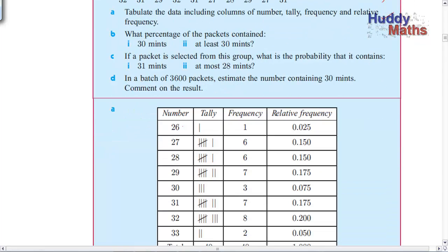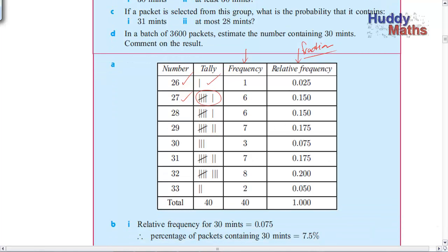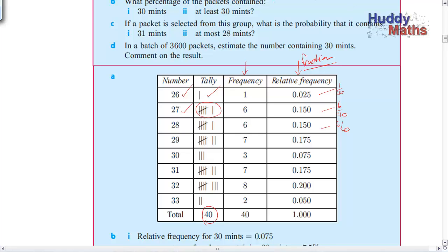Each time we see the score 26 we put a tally, then 27, getting them all tallied up so we've got a frequency. Then we're going to make a relative frequency — remember, this is a fraction. There are only 40 here, so this would be 1/40th. That's its fraction: 6 divided by 40. It's the number in the group divided by the total number of data points. What percentage of the packets contain 30 mint drops? The relative frequency is 0.075, so multiplying by 100 gives 7.5%.